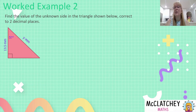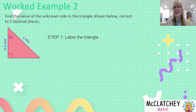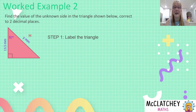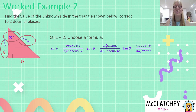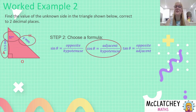Let's look at worked example two. We've got to find the unknown side with the variable y, rounded to two decimal places. Always label your triangle first — many students skip this step and that's where mistakes happen. The hypotenuse is opposite the right angle. Using 57 degrees, we identify the opposite side, and what is left is the adjacent. We need a formula using A and H — from SOH CAH TOA, the cosine formula uses adjacent divided by hypotenuse.